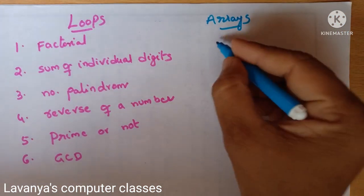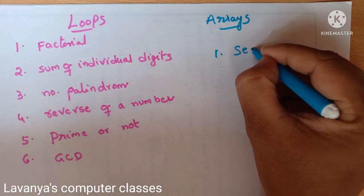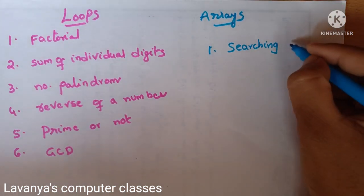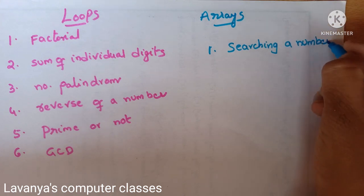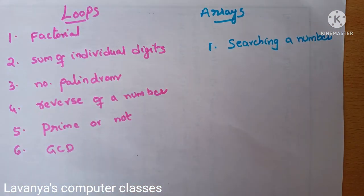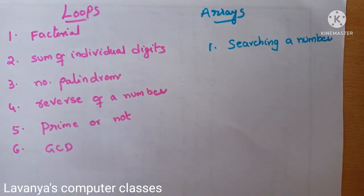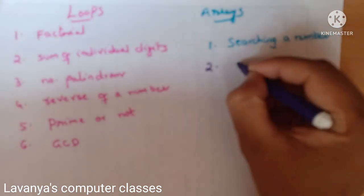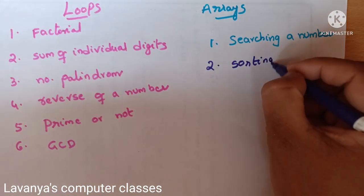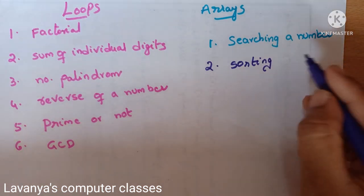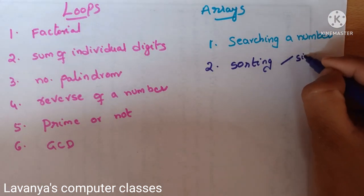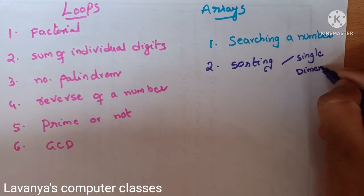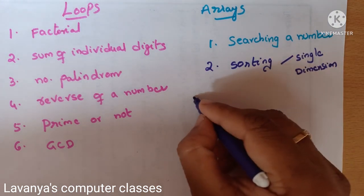The next concept is arrays. I will explain some programs in this video and remaining programs in the next video. In arrays, first is searching of a given number — take a list of numbers and find whether the given number is available in the list or not. This is very important because the fifth unit also has linear search and binary search concepts. Next is sorting — arranging all the elements in a given order. That is also very, very important. These two programs belong to single dimensional arrays.